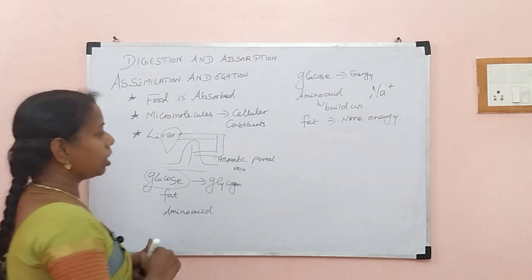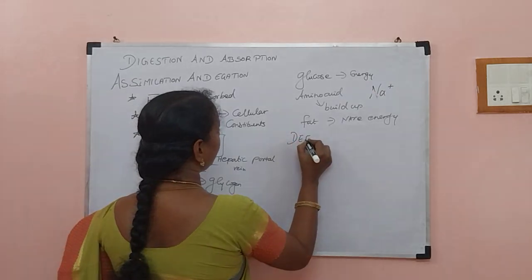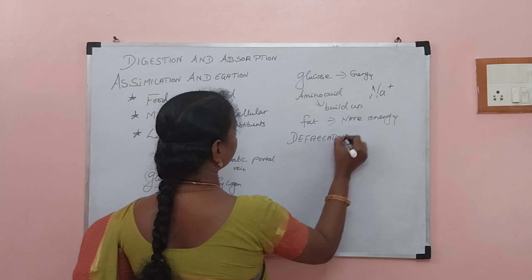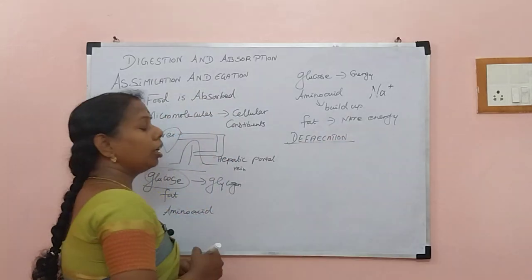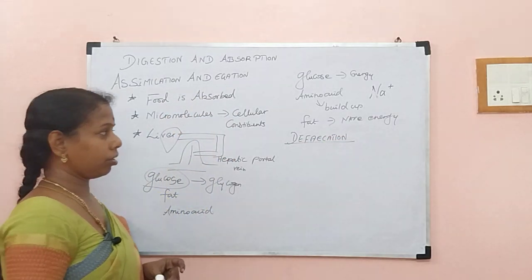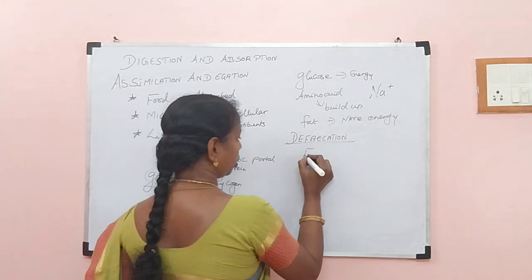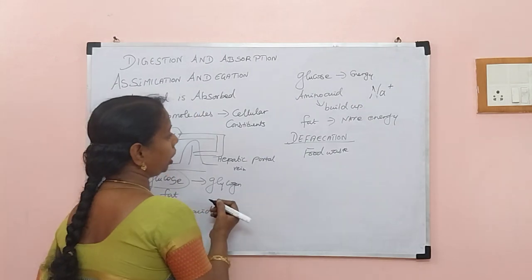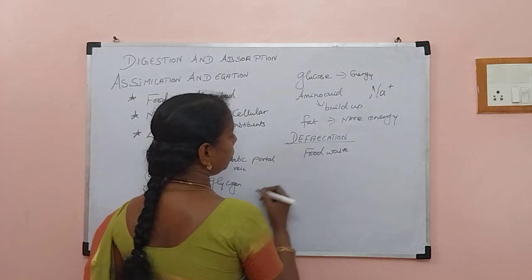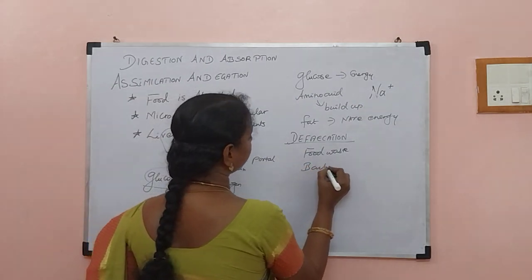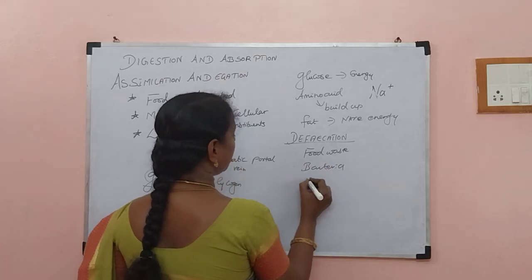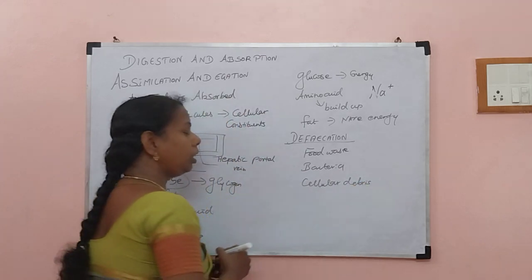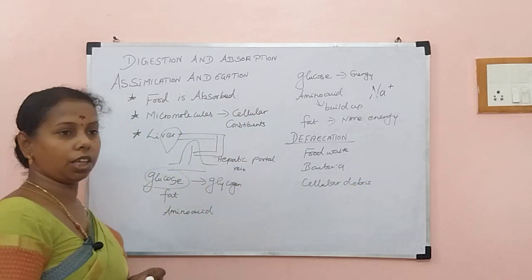Now let us see what is egation, otherwise called defecation — the removal of waste. What are those wastes? It may be food waste, water and all that we didn't digest — undigested waste material. Or it may be bacteria, or it may be cellular debris. All these are removed through defecation.